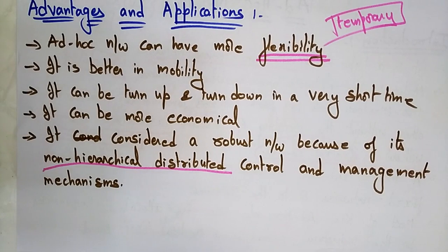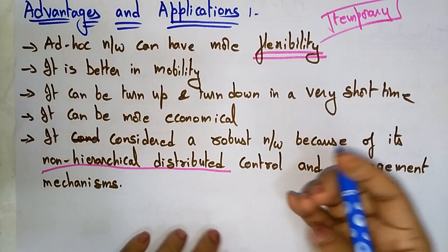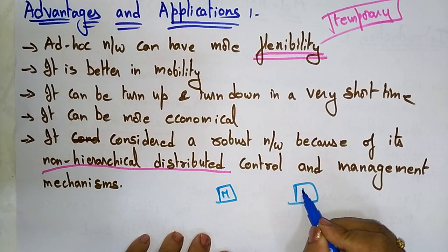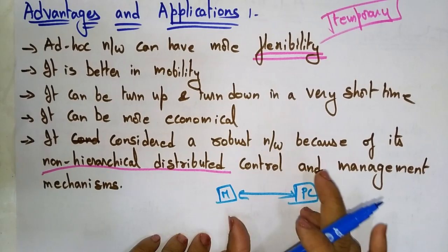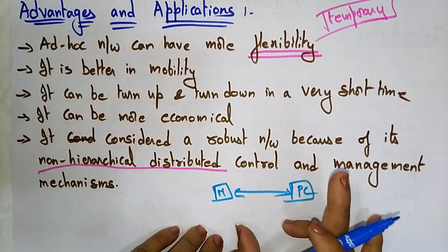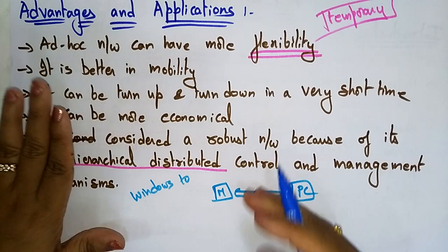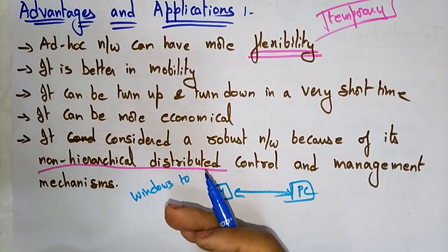You might have a doubt: if ad hoc networks are infrastructure-less, how is an ad hoc network established between, say, a mobile phone and a laptop that already has an internet connection? It's quite simple. In previous versions of Windows it was very easy, but for Windows 10 you need to open the command prompt, type the required commands, and activate the ad hoc network. You deactivate it whenever you don't require it.